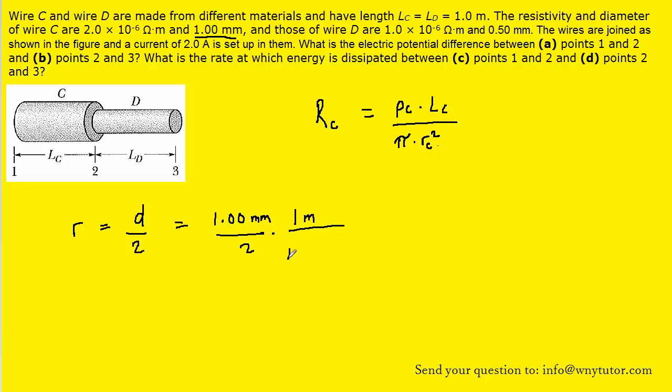And we know that 1 meter is equivalent to 1,000 millimeters. If we set up our conversion in that manner, the millimeters will cancel out. And we can see that the radius of wire C will be 5 times 10 to the minus 4 meters.